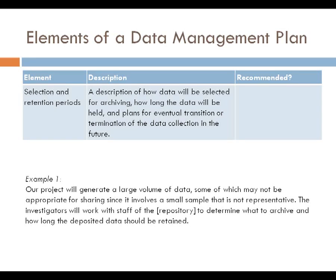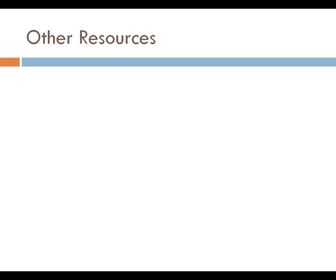Not all data need to be preserved in perpetuity, so thinking through the proper retention period for a dataset may be important to include. When there are reasons data will not be preserved permanently — for example, if informed consent was done with children and the data cannot extend past the children turning 18 without reconsenting them as adults — that would justify keeping data only until that point. It's also possible that there are reasons why the data collection is an ideal candidate for permanent preservation, which should also be specified. That covers all of the elements of the data management plan that we've thought through and our best suggestions for how to think about them.